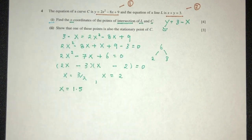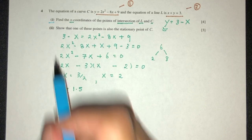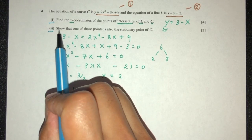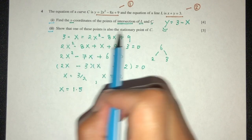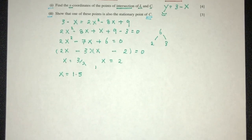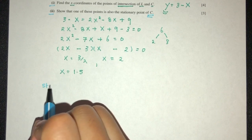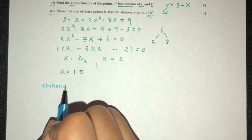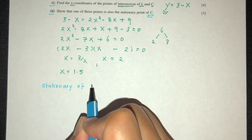For the part 1 of the question, just the x value of the point of intersection. Now, part 2, we have to show that one of these points is also a stationary point of C. So pretty easy. Let's find the stationary point of C.